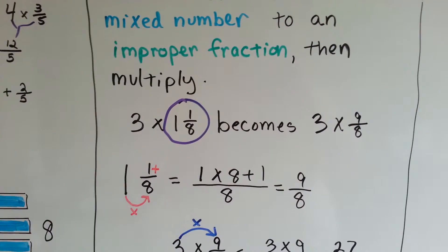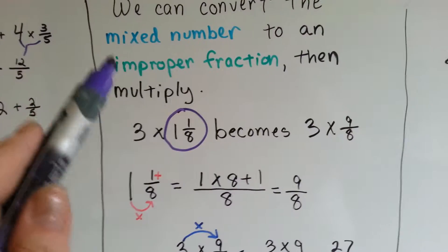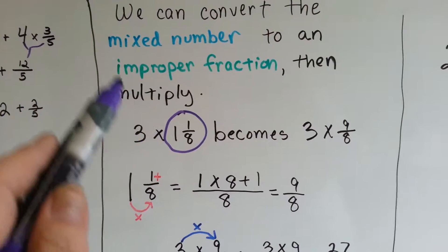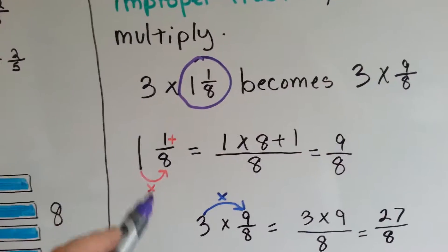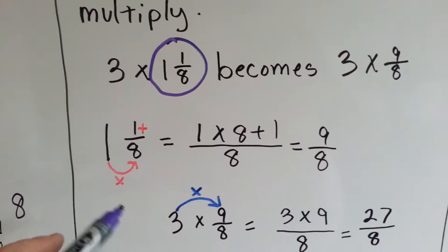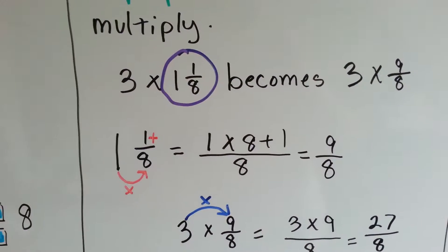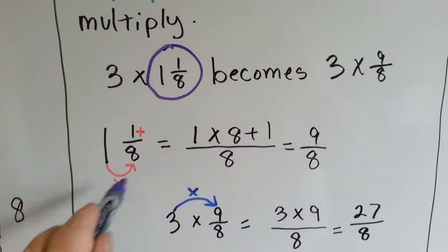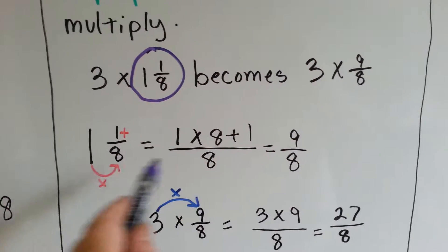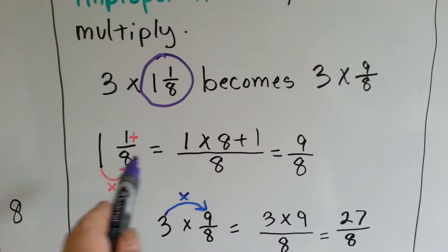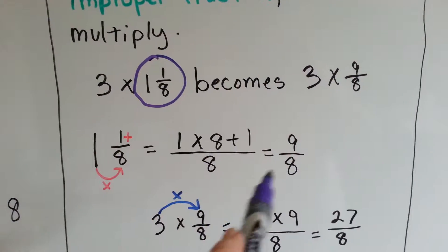If you saw videos 79 and 80, you'll know how to convert between mixed numbers and improper fractions. Here's a quick recap: multiply the whole number by the denominator and add the numerator, then put it over the denominator. So 1 and 1 eighth: 1 times 8 plus 1, all over 8. 1 times 8 is 8, plus 1 is 9 — we now have 9 eighths.